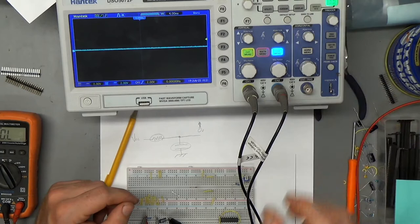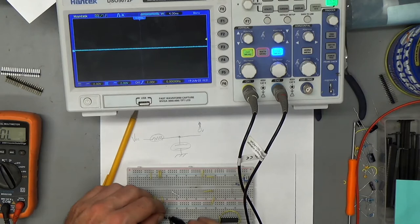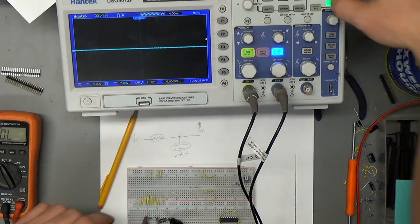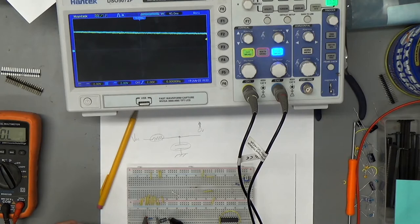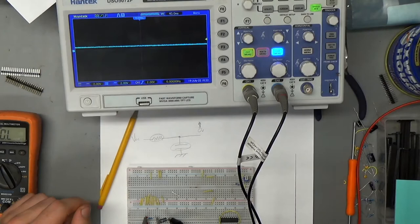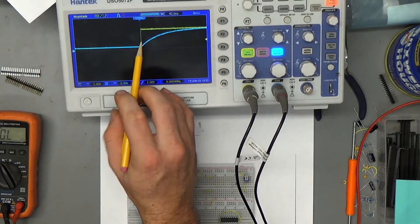And then we will turn our time base down a little bit. That's too much. Let's try four milliseconds. This ought to be a, I think this is a 100 microfarad capacitor. I don't want to pull it out and see. Let's try it and see. Single catching them up mode. Oh we didn't have enough there, let's redo that.